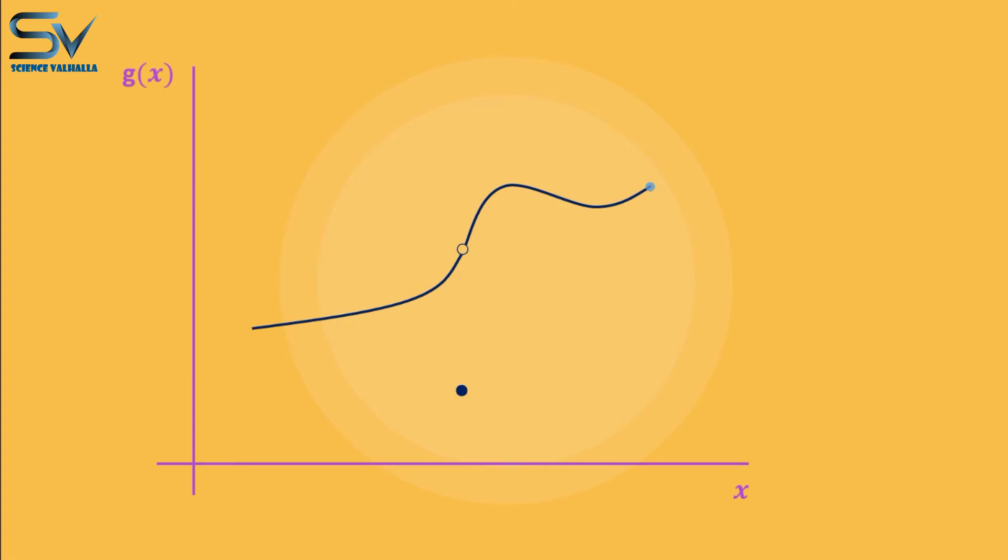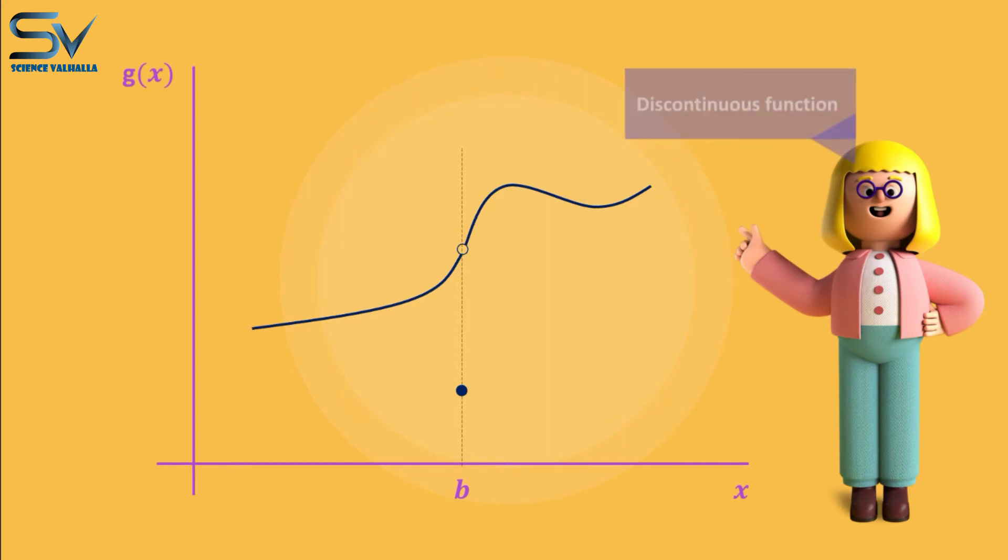That is, if we lift the tip of the pen while drawing a function, the curve will break into two or more sections. A function of this type is known as a discontinuous function.